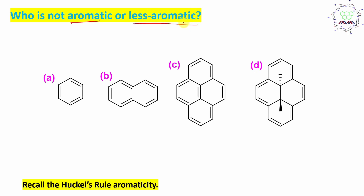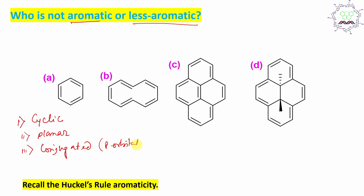So if we compare the aromaticity, we can understand their stability. Now benzene is undoubtedly aromatic according to Hückel's rule. What is Hückel's rule? There are four conditions: it must be cyclic, second planar, third the molecule must be conjugated — meaning every atom should have at least one p orbital for conjugation — and fourth, 4n+2 number of pi electrons for aromaticity. If it has 4n pi electrons, then it is anti-aromatic. Aromaticity means stabilisation, anti-aromaticity means destabilisation. So benzene is aromatic and stable.